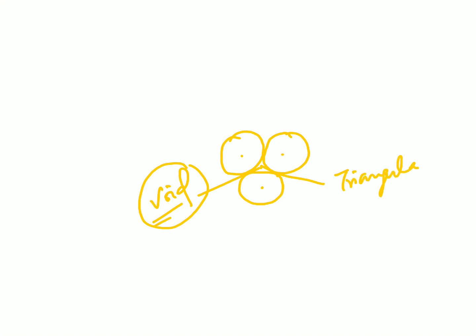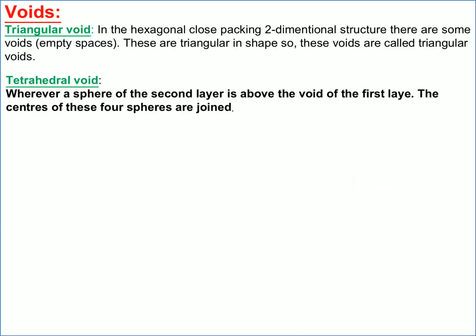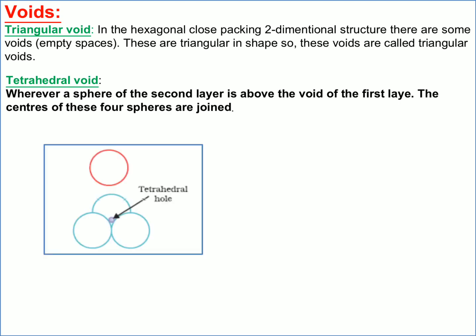The void created by three constituent particles is called a triangular void because there are three particles attached to each other and the void formed has a triangular shape. So in the case of triangular voids, three constituent particles are touching each other and the void between them is triangular in shape.